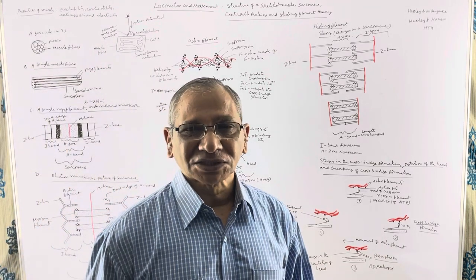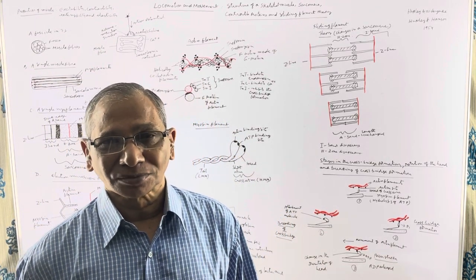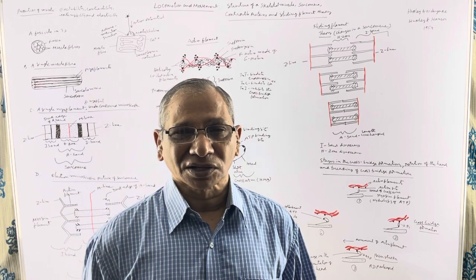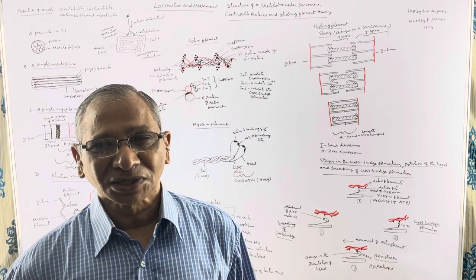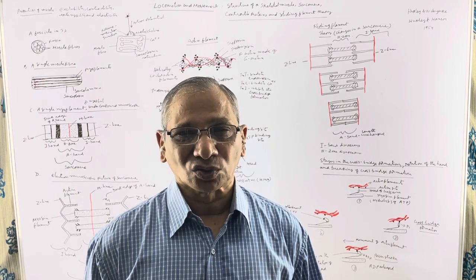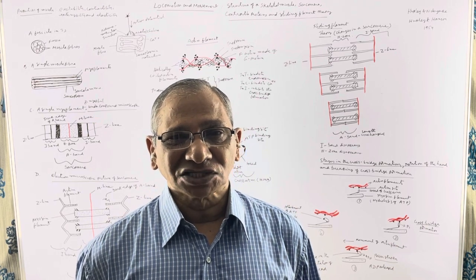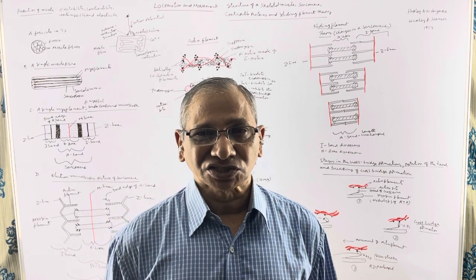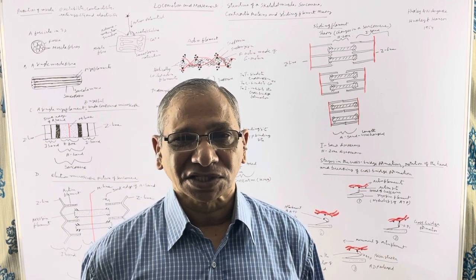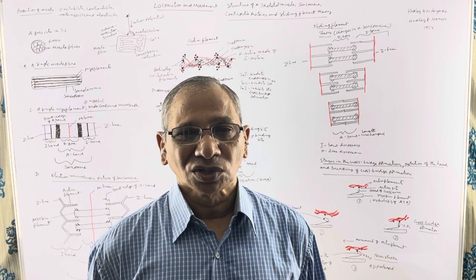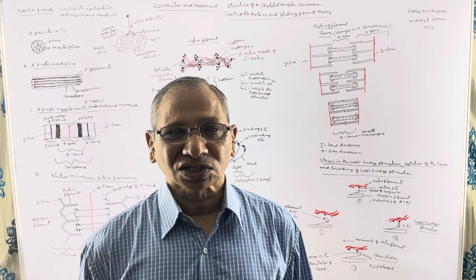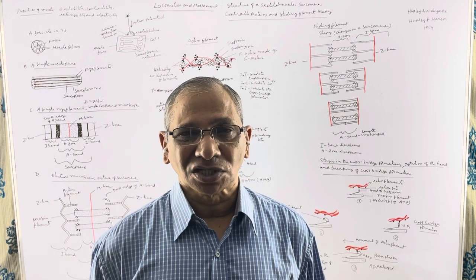The muscles are derived from the mesoderm. The muscles are of three types: skeletal muscle, also called striated muscle or striped muscle. These muscles are always attached to the bones and are under our voluntary control. The second type is smooth muscle, which has no striations and is present in hollow visceral organs like the digestive system, blood vessels, and reproductive ducts. The third type is cardiac muscle, present in the heart of all vertebrate animals.